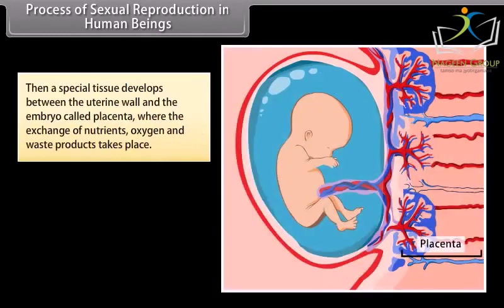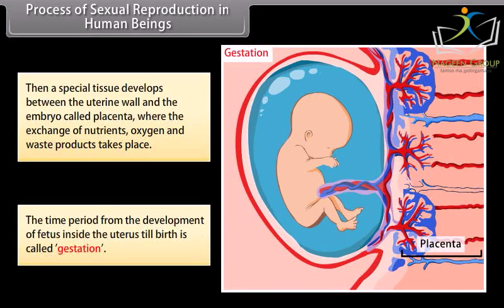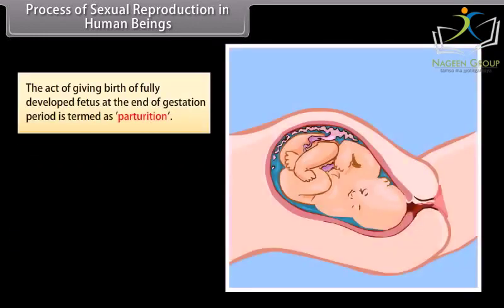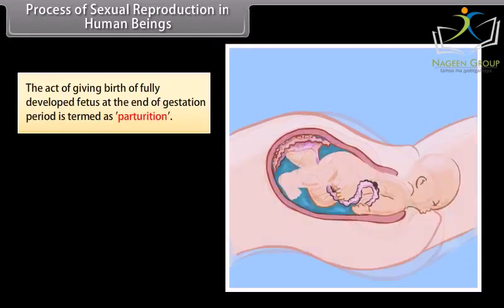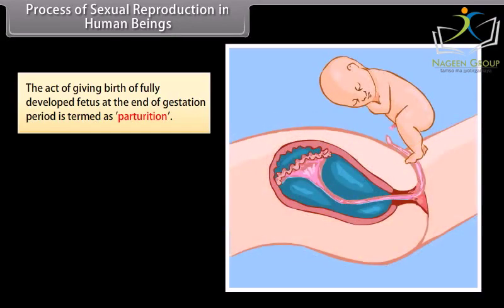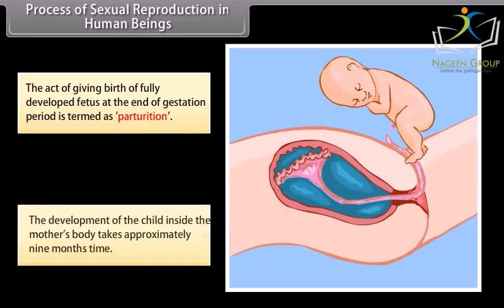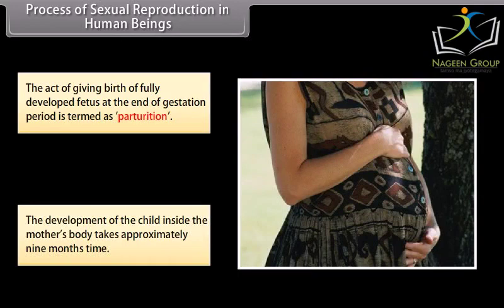A special tissue develops between the uterine wall and the embryo called the placenta, where exchange of nutrients, oxygen and waste products takes place. The time period from the development of the fetus inside the uterus until birth is called gestation. The act of giving birth of a fully developed fetus at the end of the gestation period is termed parturition. The development of the child inside the mother's body takes approximately nine months.